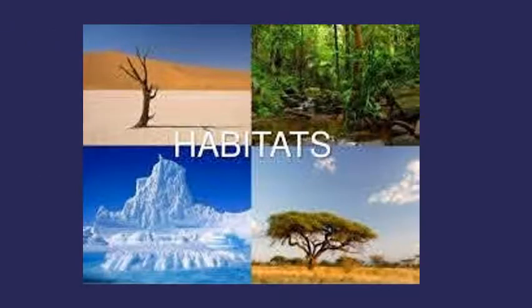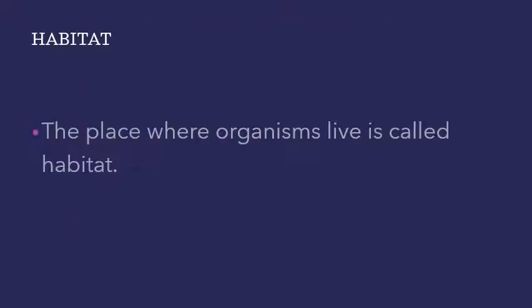Next is habitats. The place where organisms live is called a habitat. A habitat is the place where any organism naturally lives — it is like a home. The habitat provides food, water, air, shelter, and other needs of organisms. Several kinds of plants and animals can live in the same habitat.